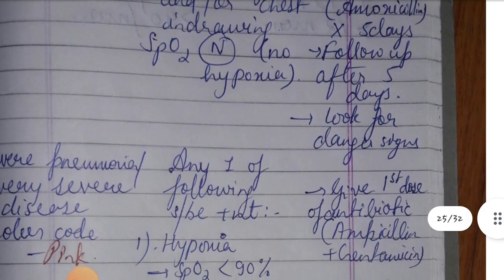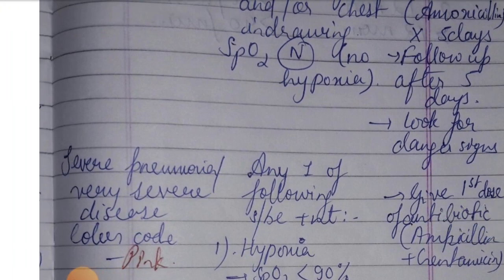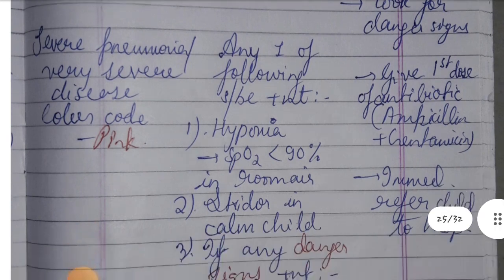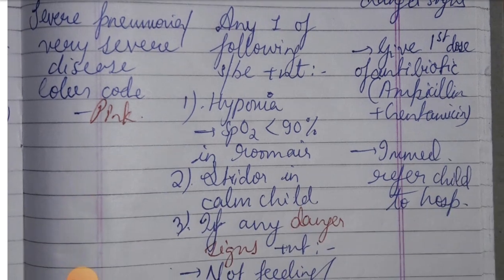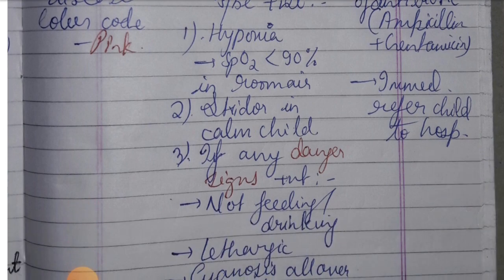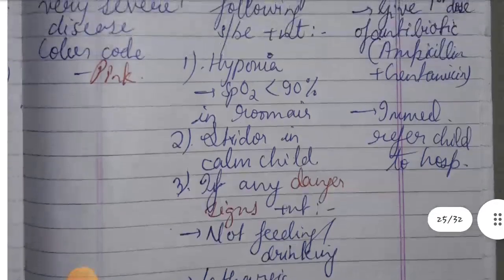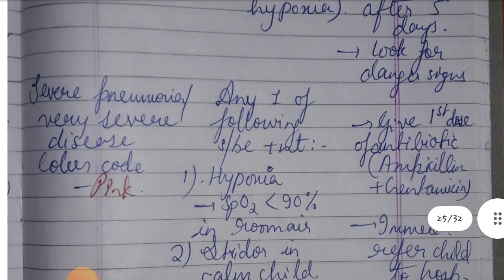If there is severe pneumonia or very severe disease, the color code is pink. Features include hypoxia with SpO2 less than 90% in room air, stridor in a calm child, or danger signs such as the child not feeding or not drinking, lethargy, cyanosis, convulsions, or cyanosis all over the body. Management includes giving a first dose of antibiotic - ampicillin and gentamicin - and immediately referring to hospital.